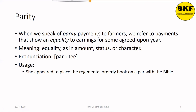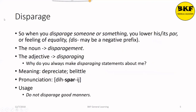Here's a usage for parity: She appeared to place the regimental orderly book on a par with the Bible. Disparage. When you disparage someone or something, you lower his or its par or feeling of equality. 'Dis' may be used as a negative prefix. The noun form is disparagement and the adjectival form is disparaging. Here's a usage: Why do you always make disparaging statements about me? Its meaning is to depreciate or belittle, with stress on the 'par' syllable. Usage: Do not disparage good manners.